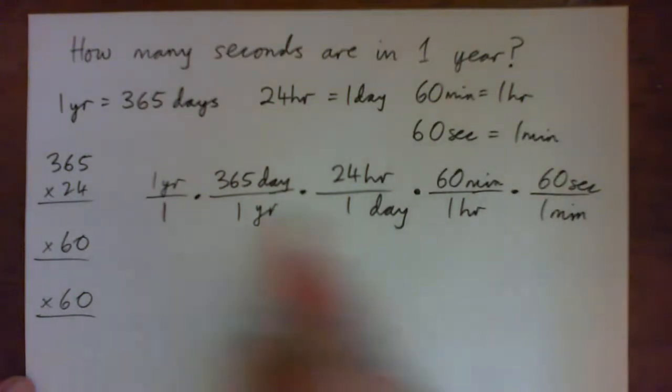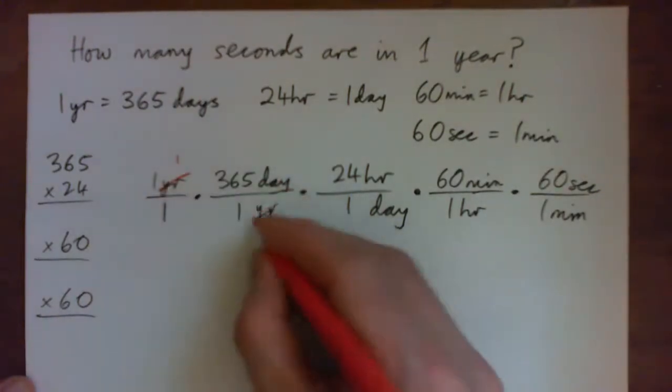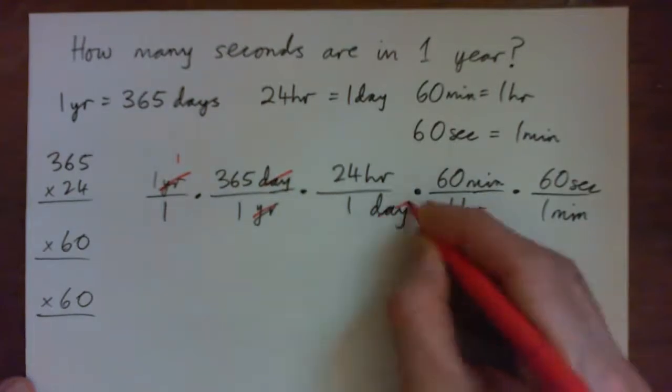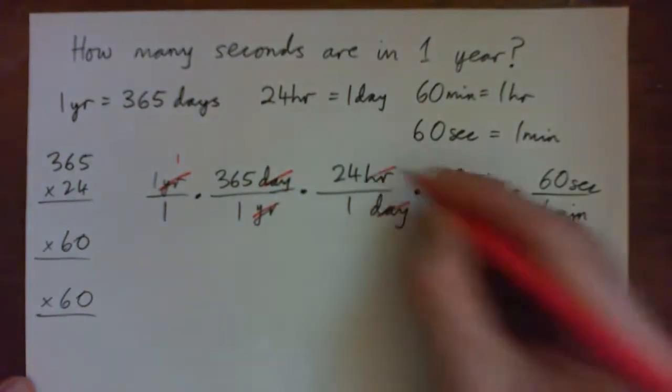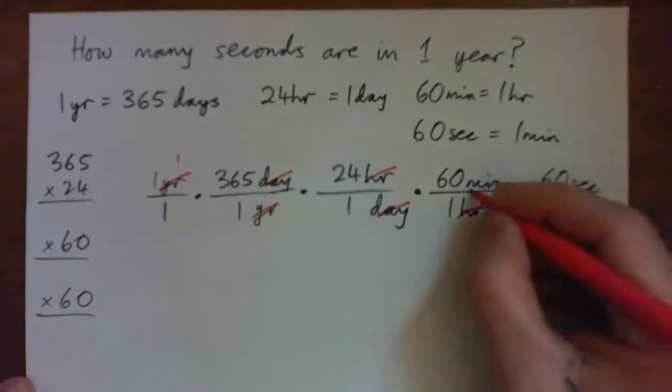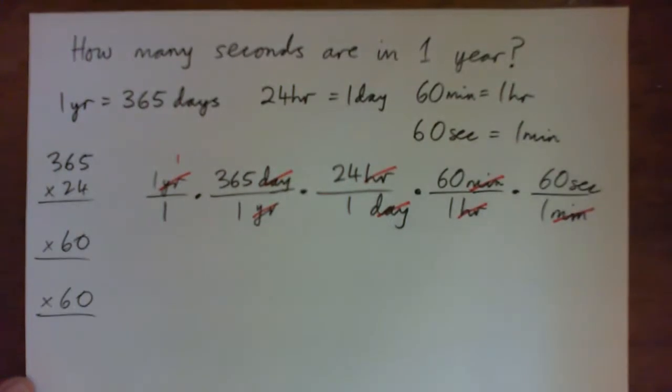If we set it out like this, the years cross-cancel, the days cross-cancel to leave hours, the hours cross-cancel to leave minutes, the minutes cross-cancel to leave seconds. That makes sense - you just multiply all these numbers together.